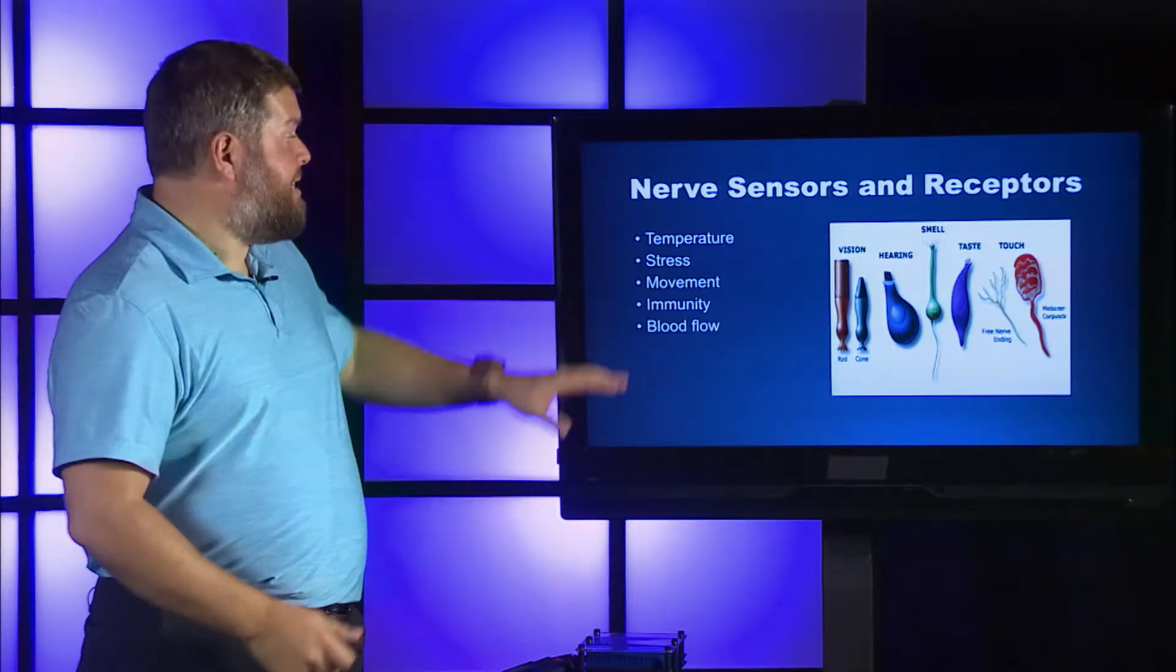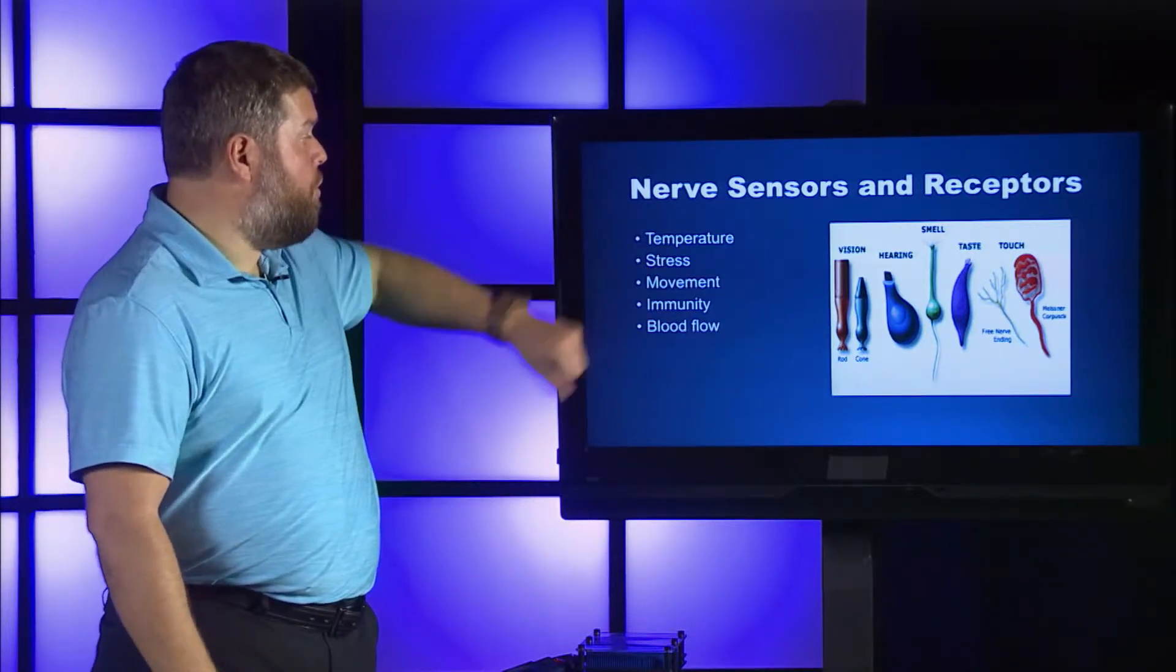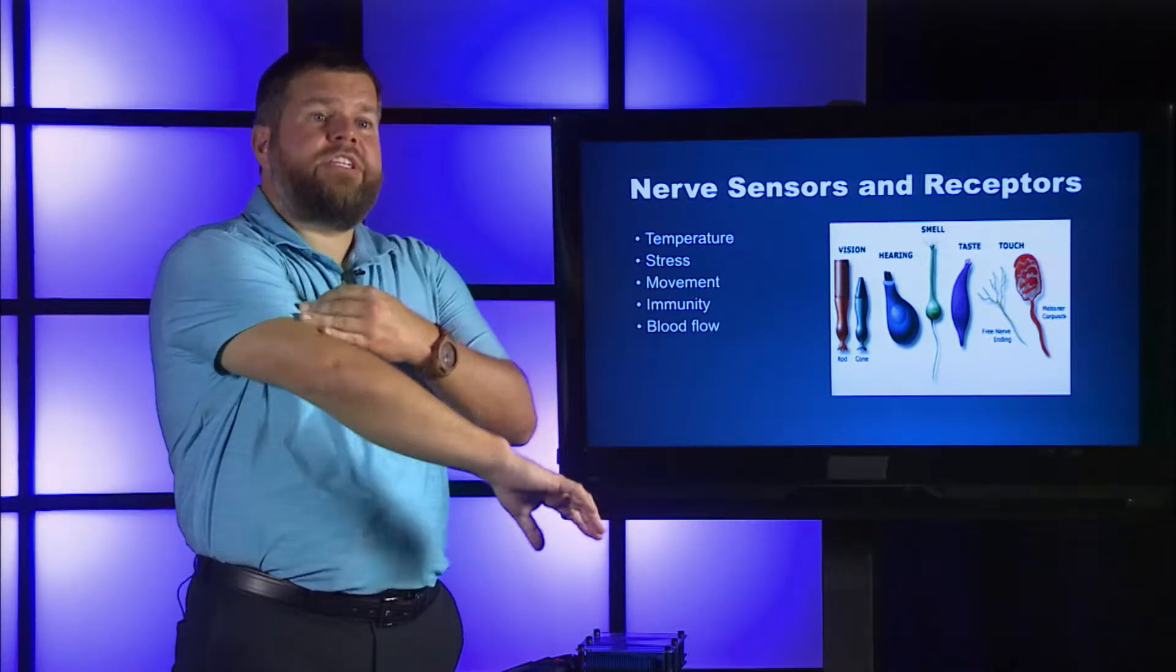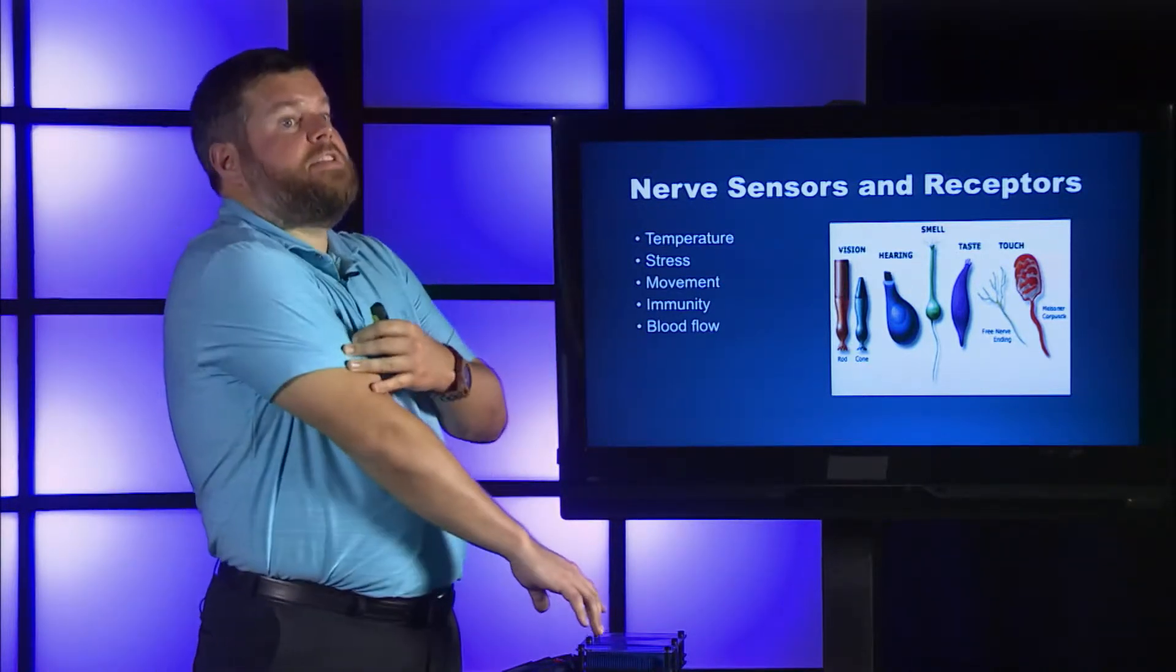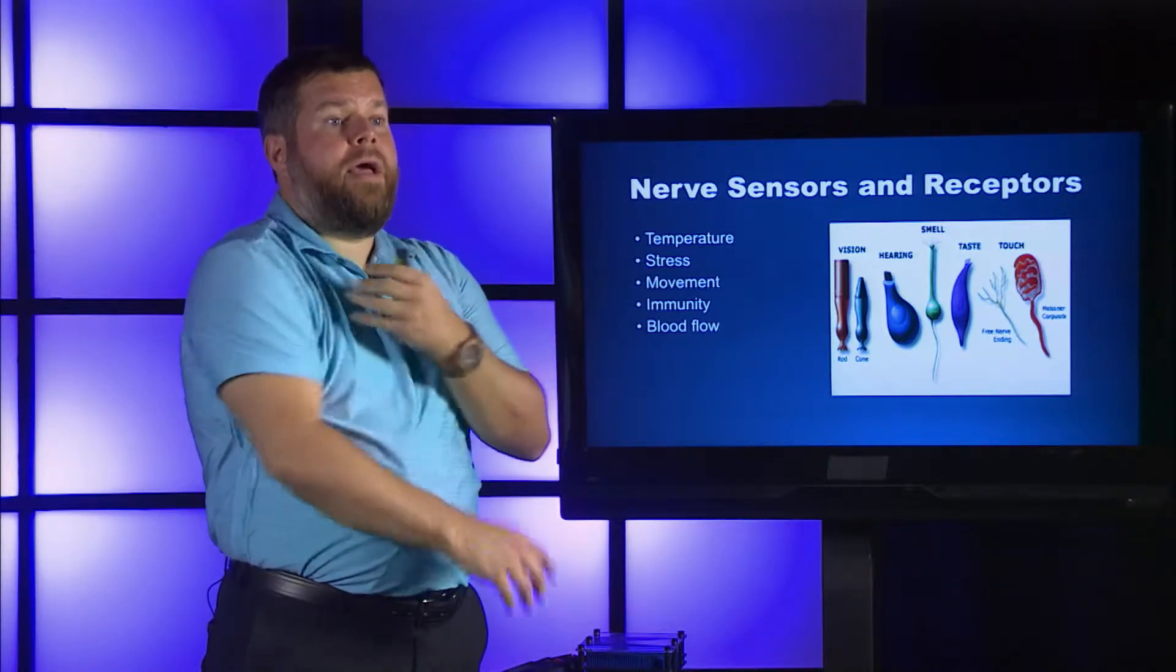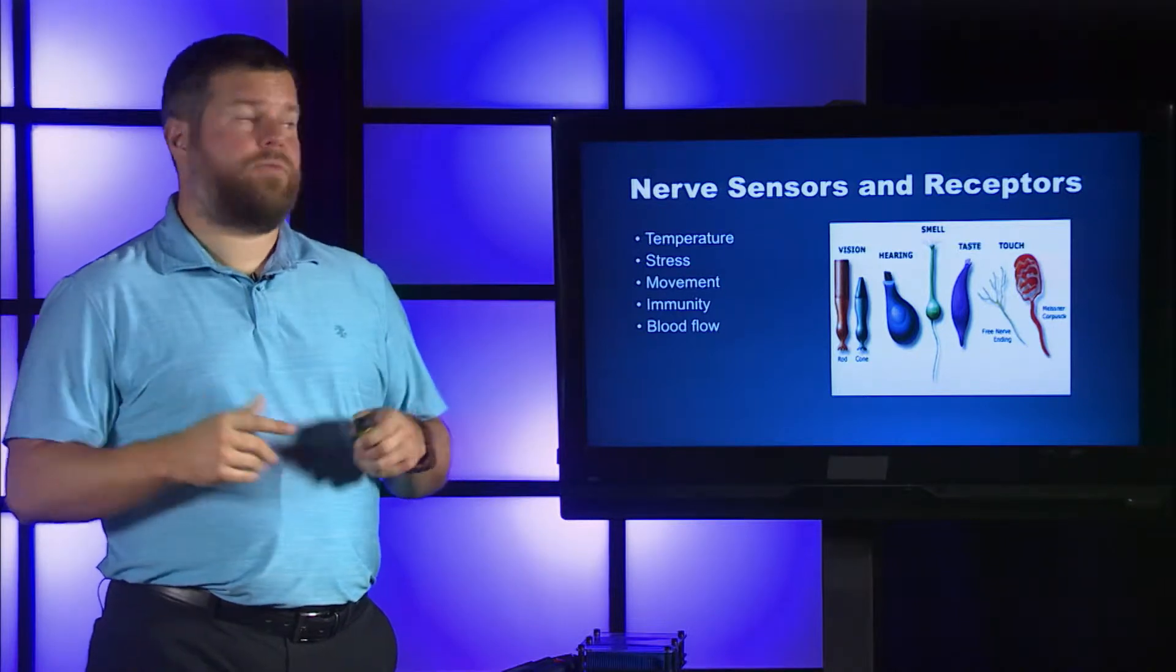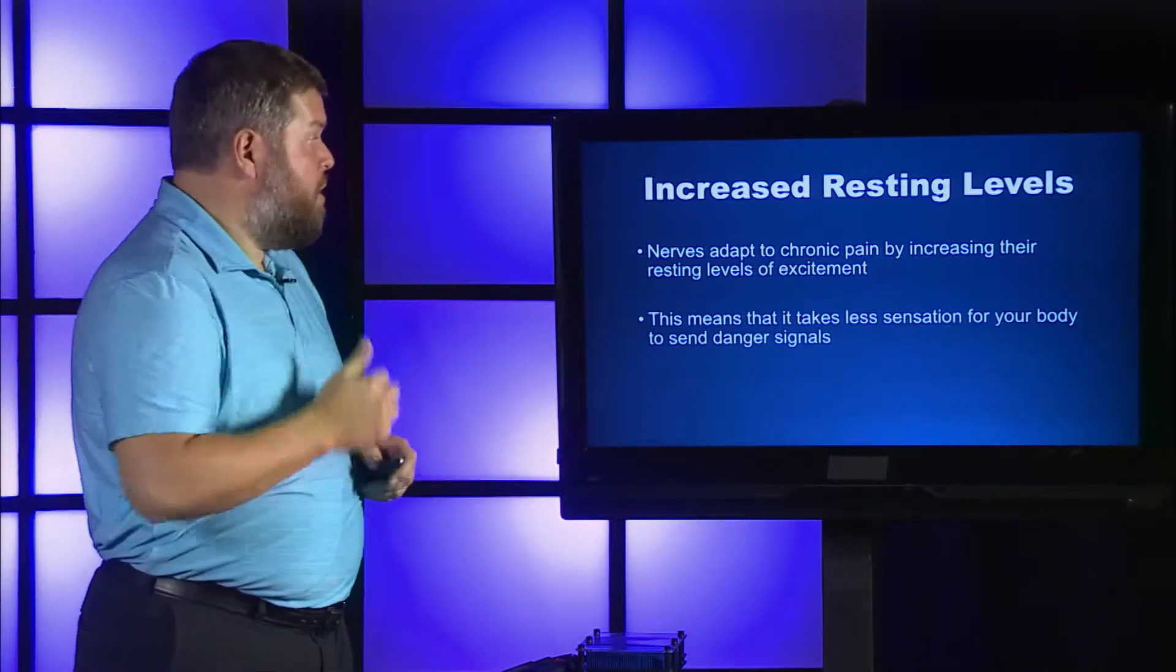The same thing with stress or movement. Maybe you move your body in a way at which there's no tissue damage happening, but all of a sudden your shoulder or your neck lock up because the brain panicked and it's stuck in this neurofeedback loop of overreacting when something happens to it.